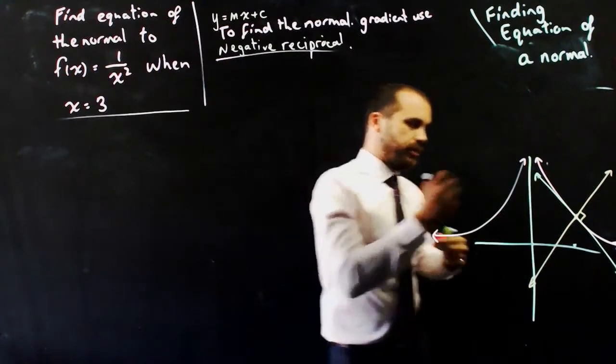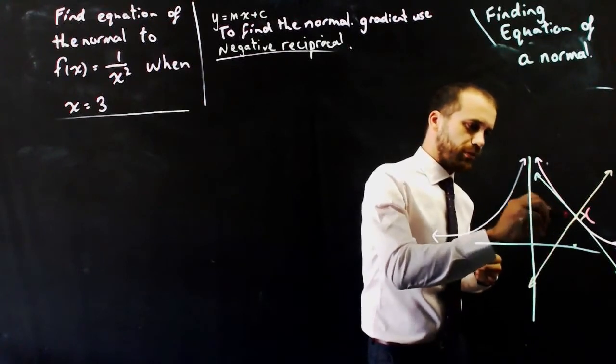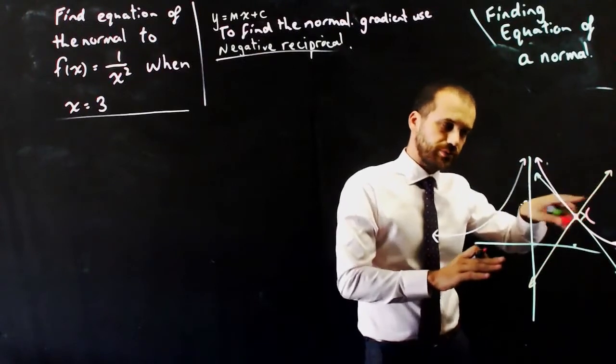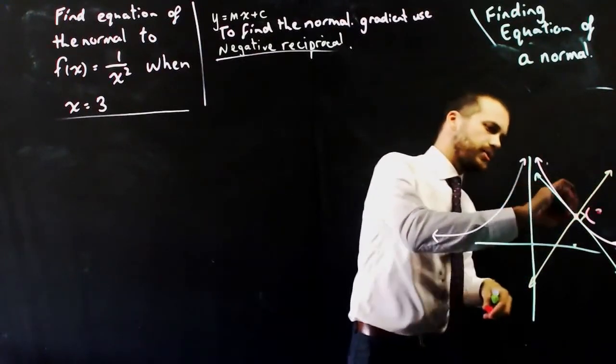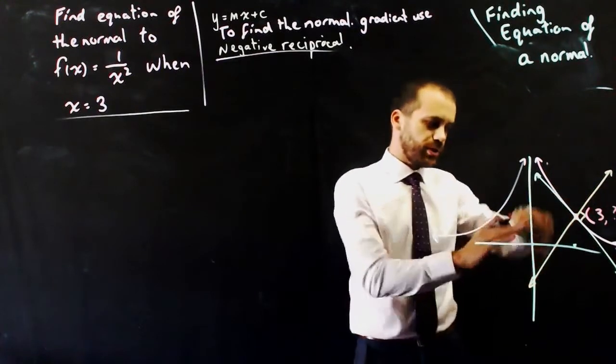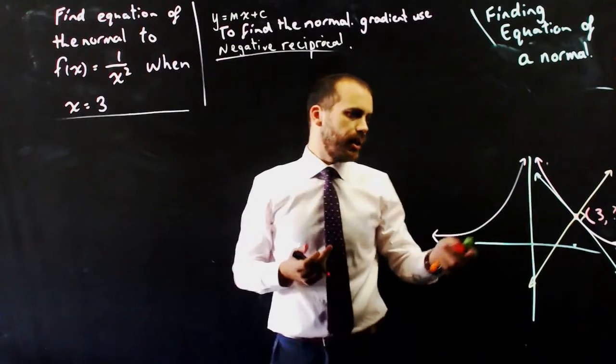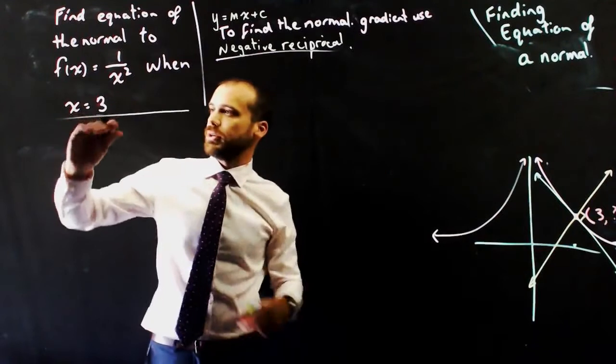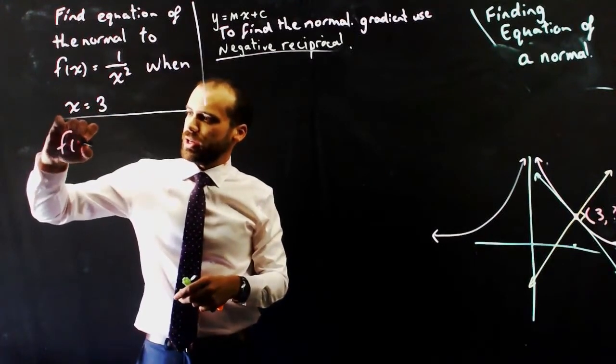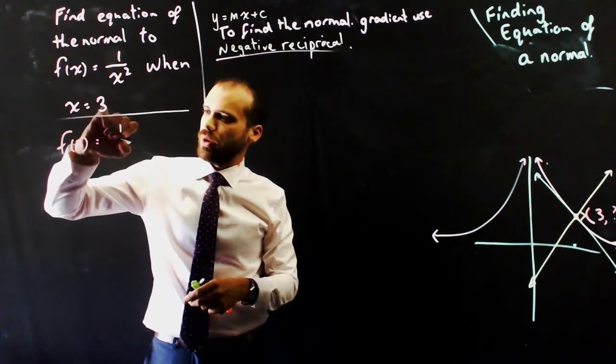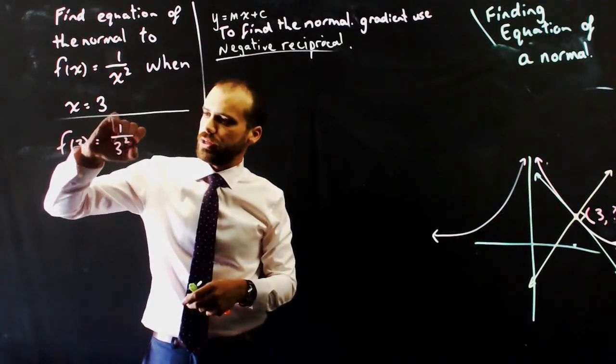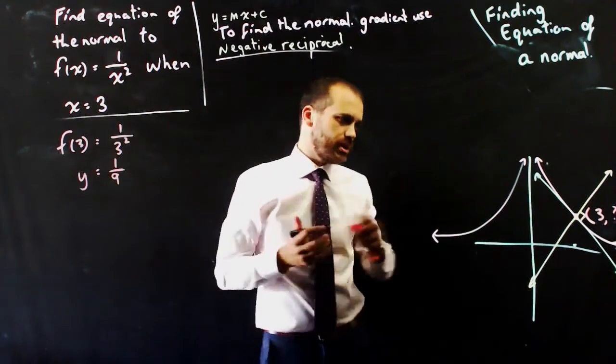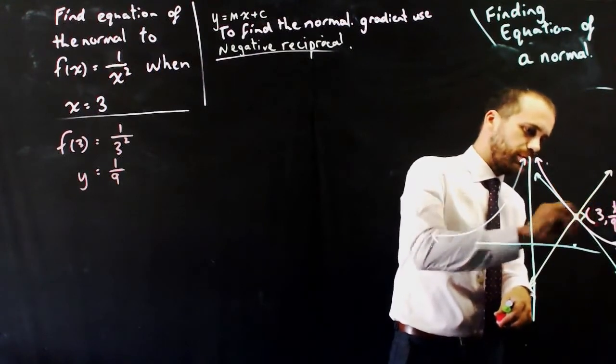So it would be useful to know the coordinates of this point and the gradient of the normal. When x equals three, I know this but I don't know that, and I also don't know the gradient of the normal, so I need to find both of those things. I'm going to find that y point first using the initial function. When x is equal to three, one on three squared will be one on nine. So the y coordinate is going to be one ninth.